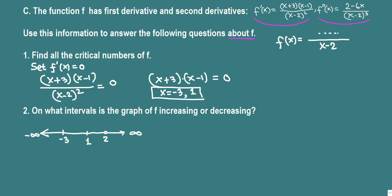We pick a representative from the interval negative infinity to negative 3 — let's take x equals negative 4 — and plug into the first derivative. Negative 4 plus 3 is negative 1, and negative 4 minus 1 is negative 5. Negative times negative is positive on top, and the bottom is always positive since it's squared. So the derivative is positive on this interval.